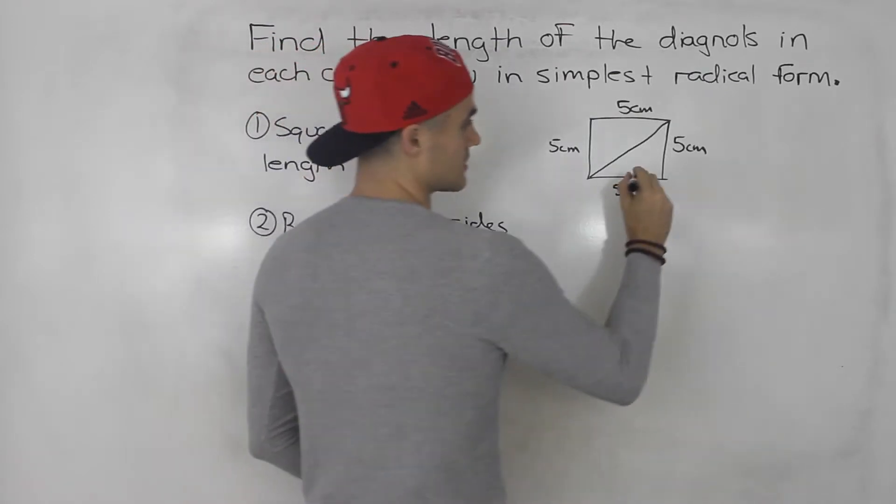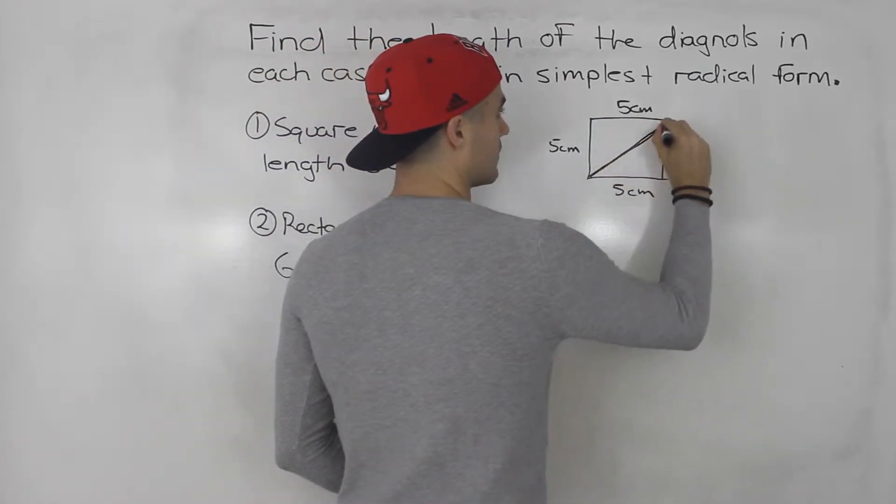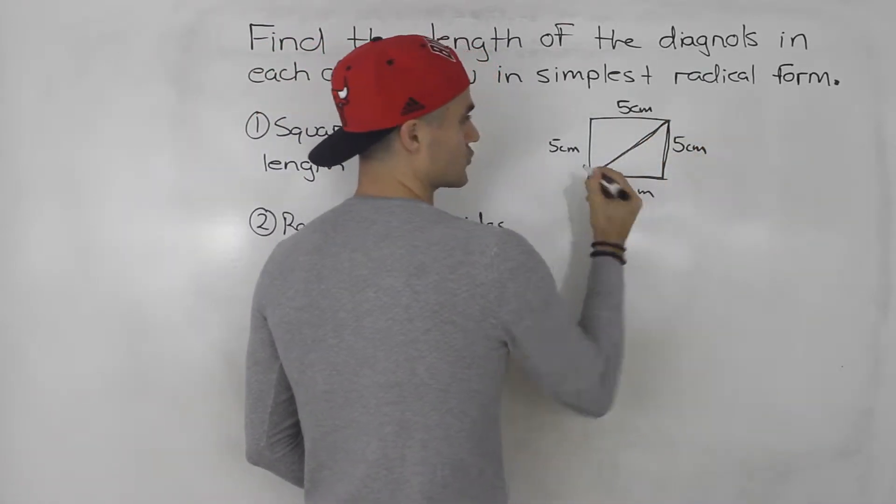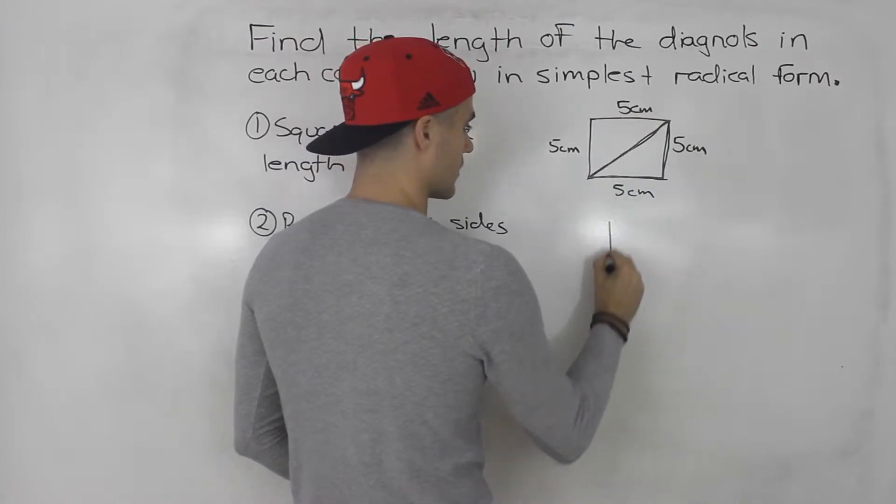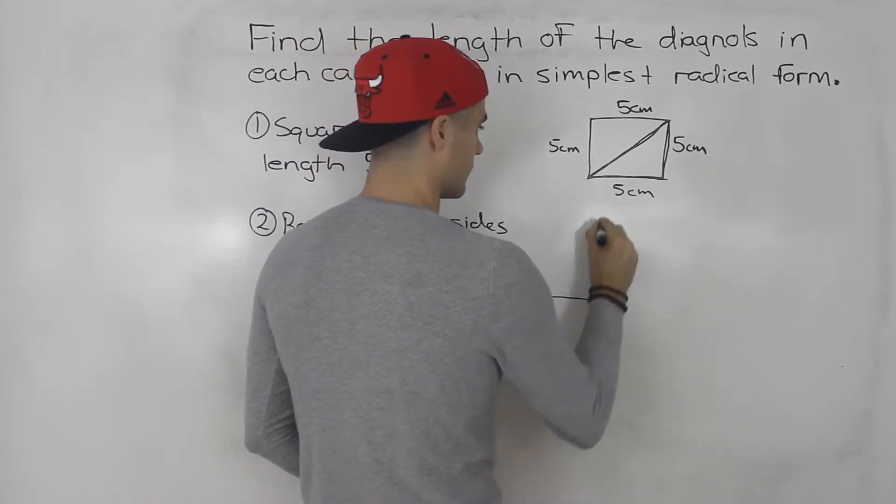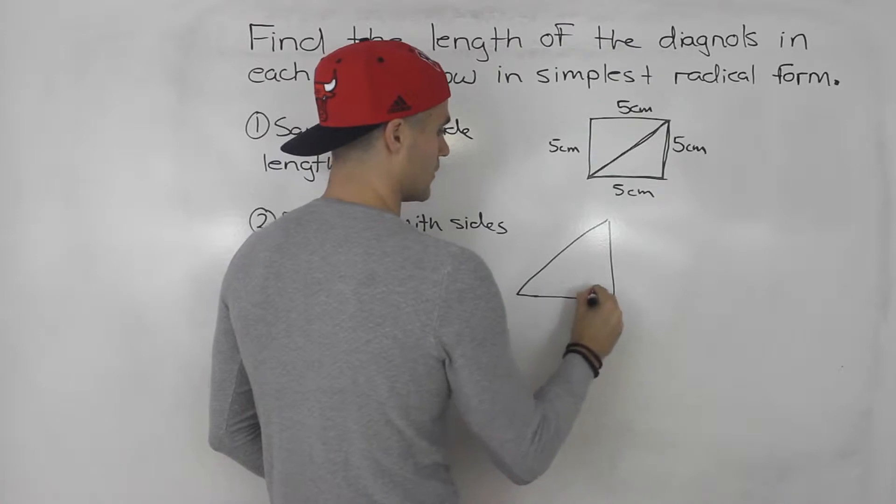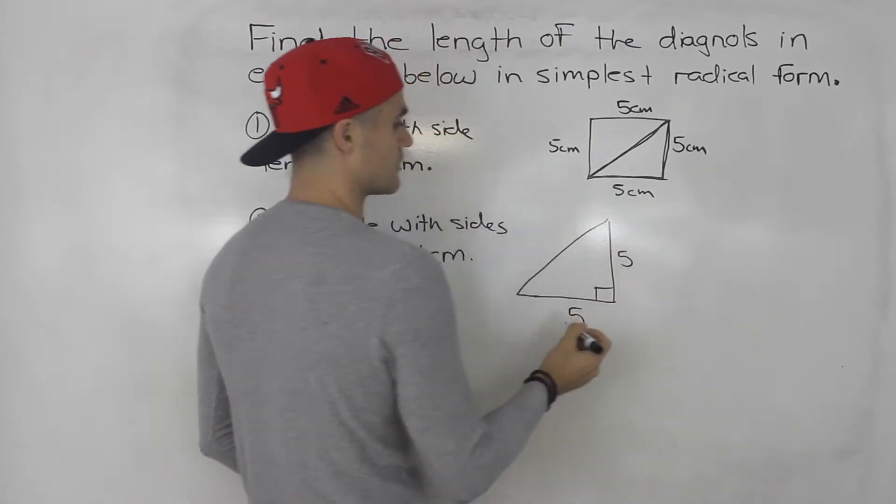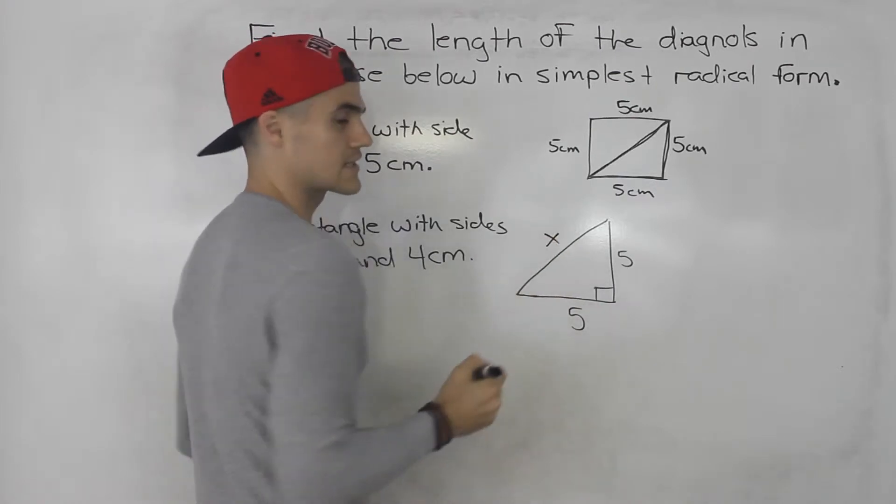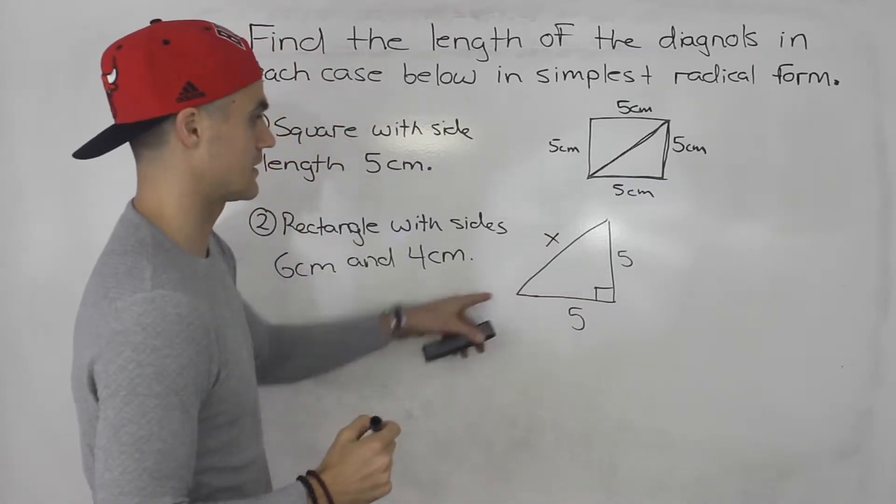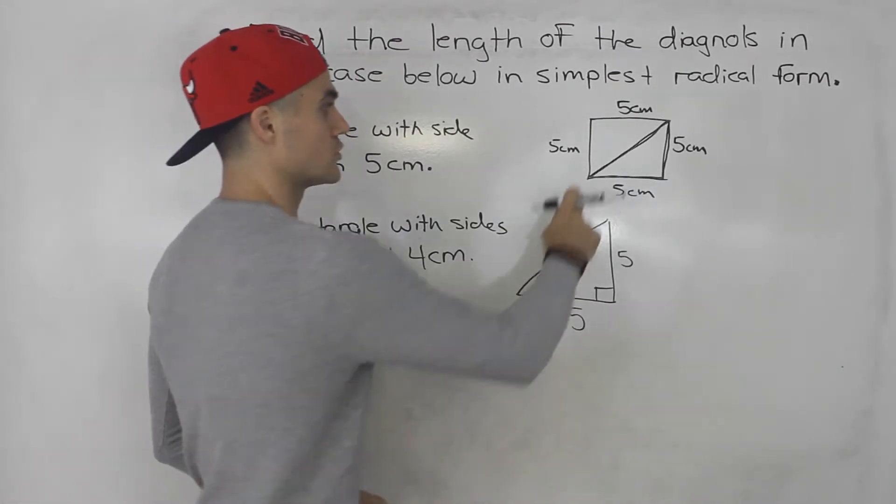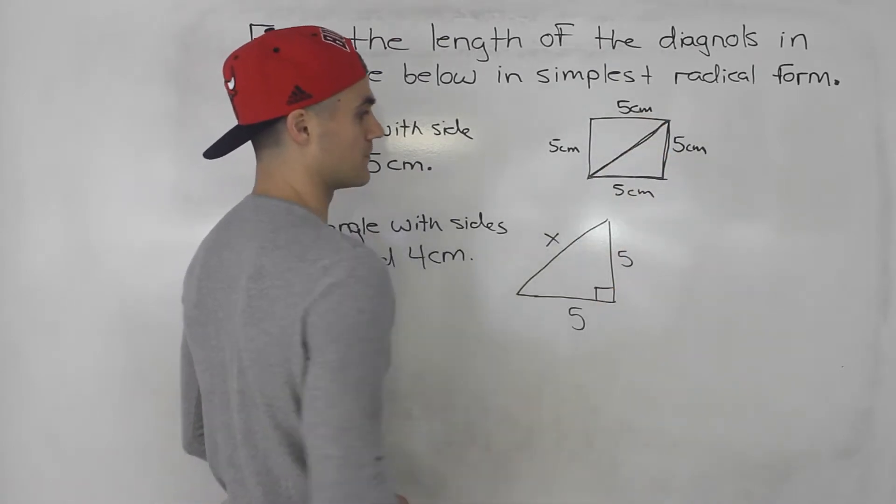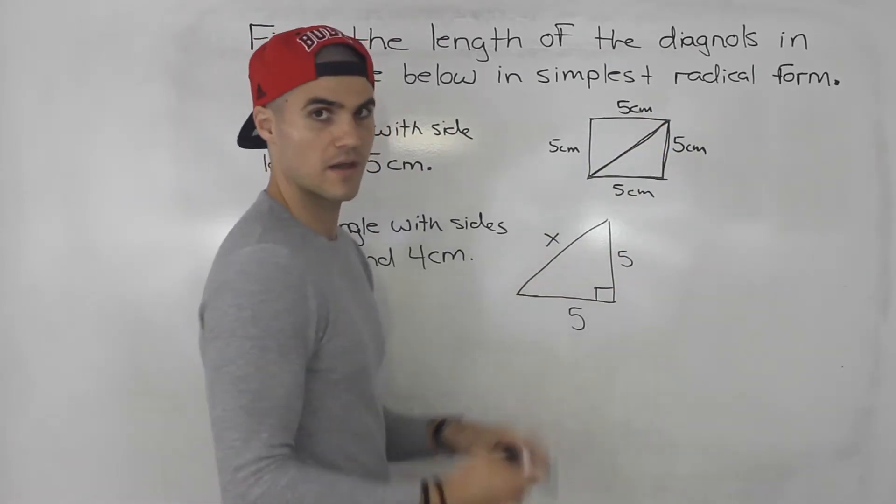Well notice that here we have a triangle. If we draw that triangle out, notice it's a right angle triangle. And this is five, this is five. Let's say we're solving for this length, x. That's the length of the diagonal. I only drew half of the square here. We could solve for this with Pythagoras theorem.